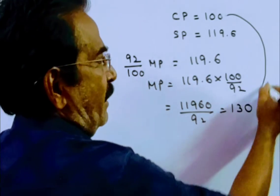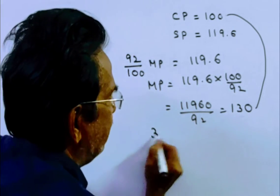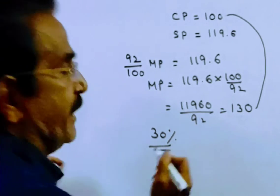Friends, cost price is 100. Selling price is 130. So, profit percent is 30% friends.